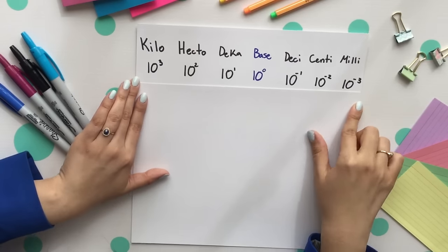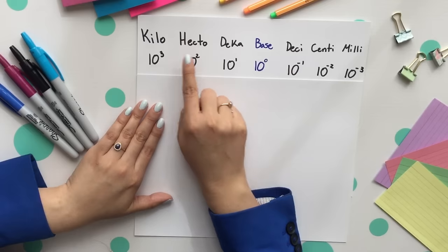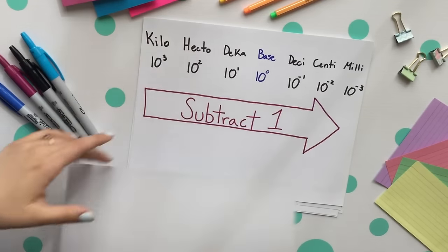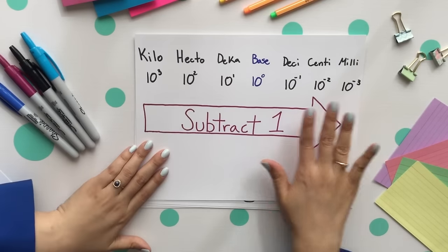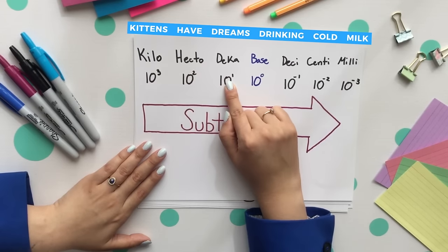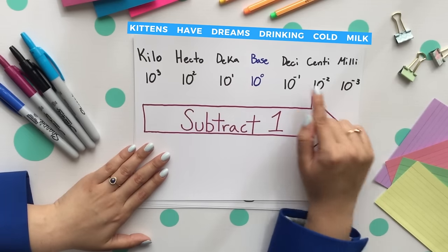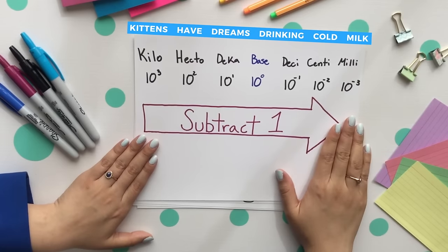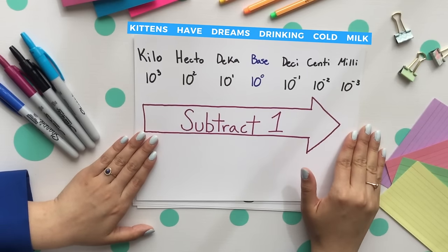How to remember this? Notice how everything, every exponent is going down by one. So all you have to do is subtract by one starting with our kilo. So three minus one gives us two, two minus one gives us our deca, and so on and so forth. This is how you remember the typical units used for the metric system.